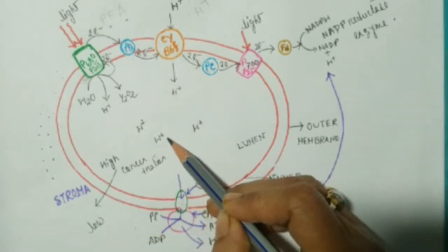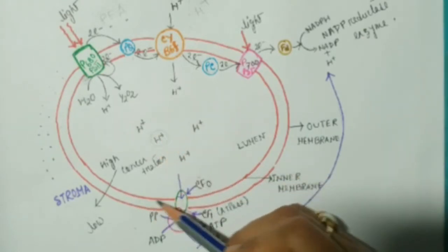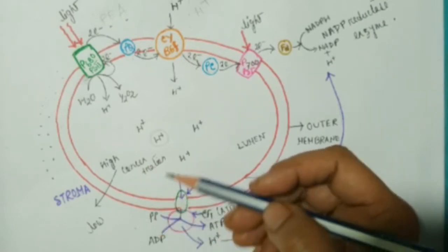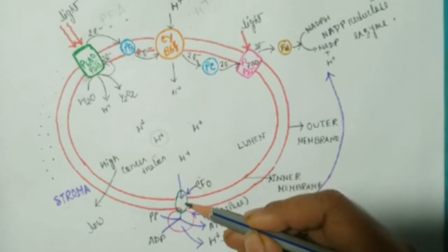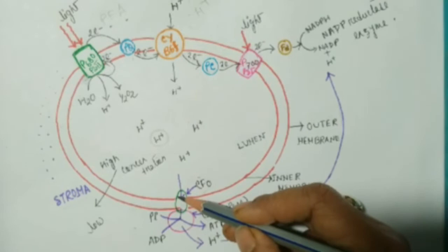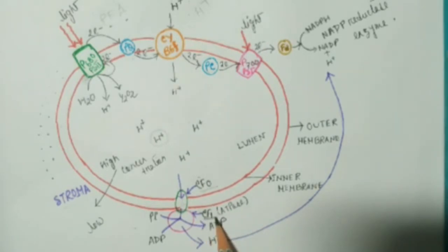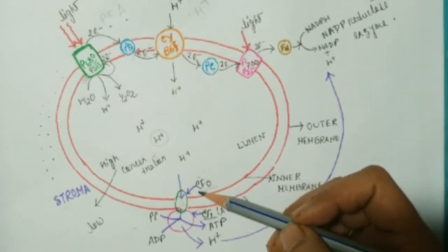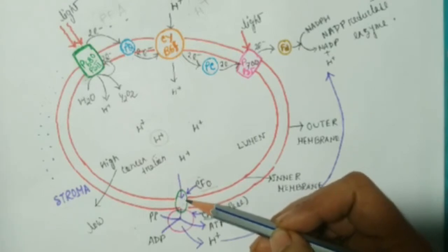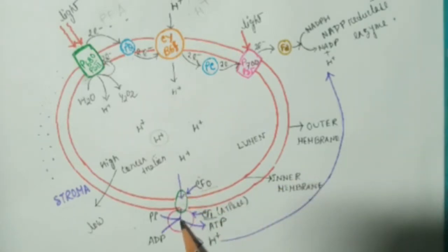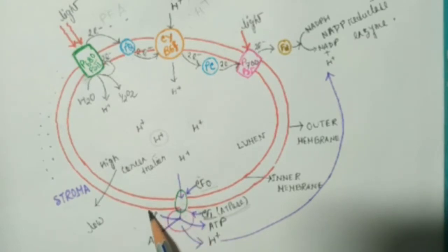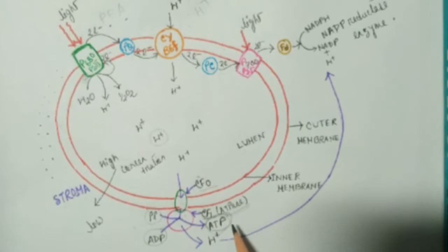Since H⁺ is an ionic compound, the cell membrane cannot permit it to pass through directly. So protons pass from lumen to stroma through a particular channel called the proton pump, which has two components: CF0 and CF1. CF0 helps in the diffusion of protons and requires no energy. When protons reach the CF1 component, the CF1 acts as an ATPase enzyme and, using that energy, joins inorganic phosphate and ADP to finally form ATP.